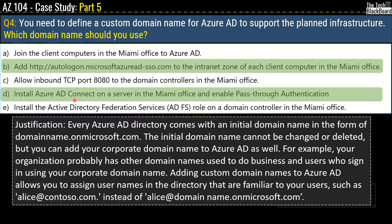The justification: every Azure AD directory comes with an initial domain name in the form of domainname.onmicrosoft.com. The initial domain name cannot be changed or deleted, but you can add your corporate domain name to Azure AD as well. Adding custom domains in Azure AD allows you to assign user names familiar to users — such as alice@contoso.com instead of alice@domainname.onmicrosoft.com. This links to the case study's network infrastructure, Active Directory environment, and planned Azure AD infrastructure sections.